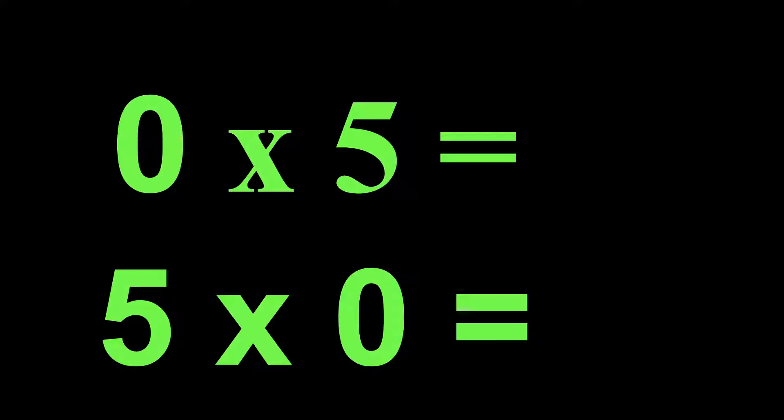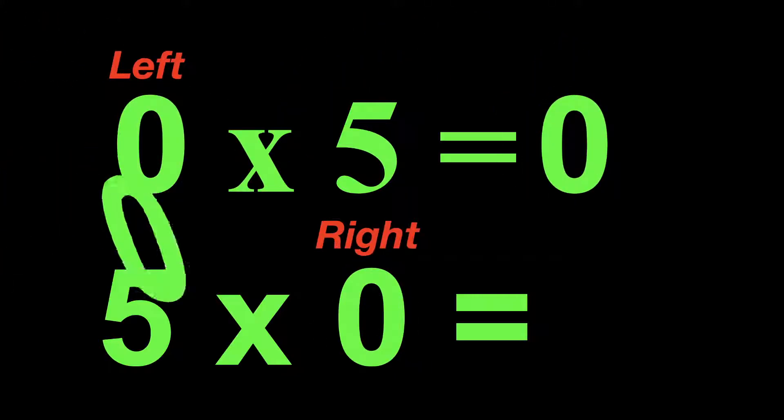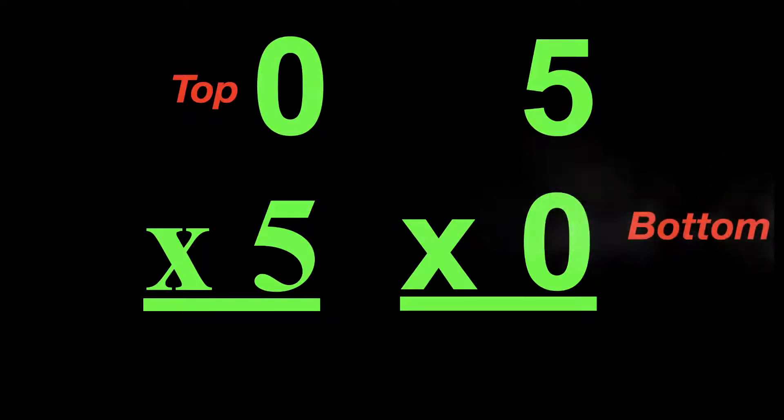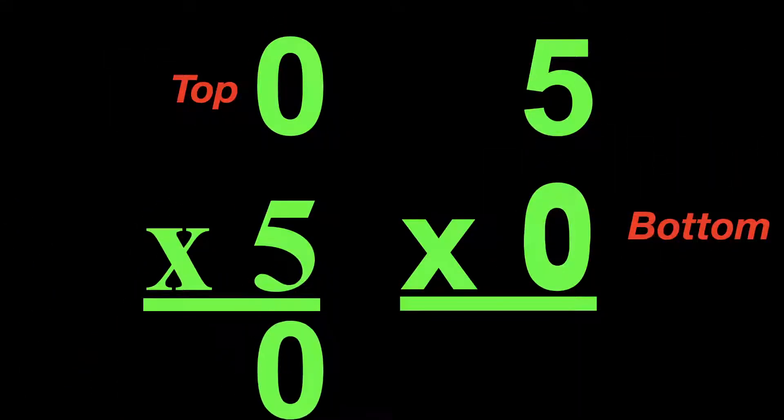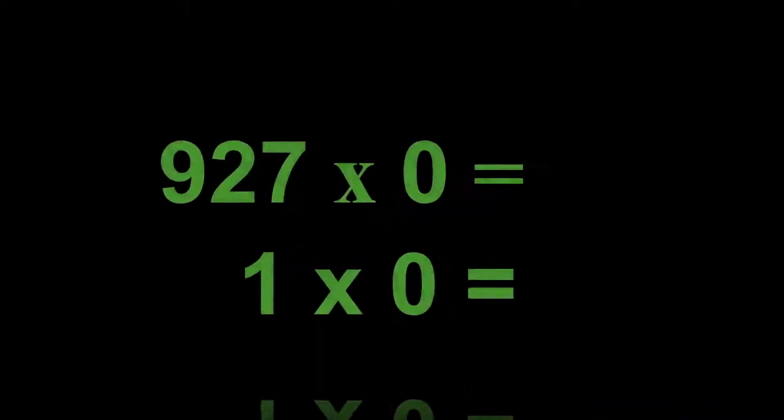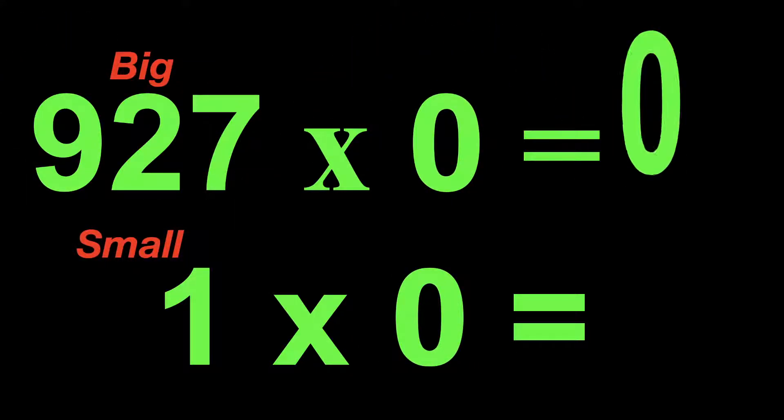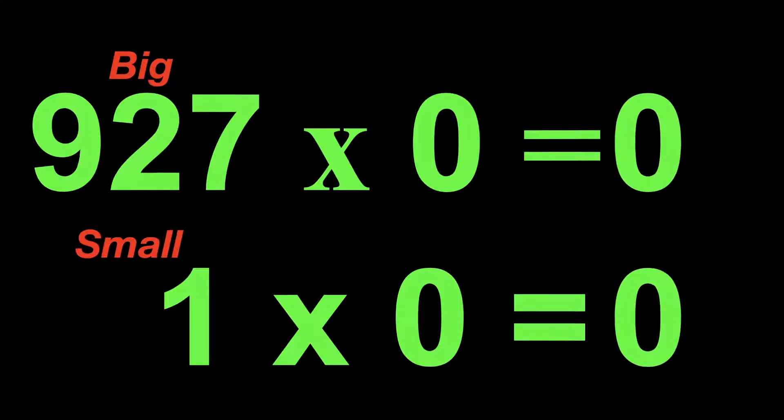The 0 rule will be true if the 0 is on the left side, if it's on the right side, doesn't matter. If the 0 is on the top or if it's on the bottom, it's going to equal 0. It doesn't matter if it's a really large number like 927 or a small number like 1, it's still going to equal 0. That's a pretty neat rule.